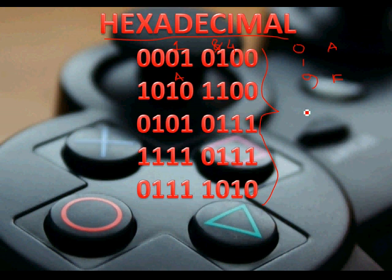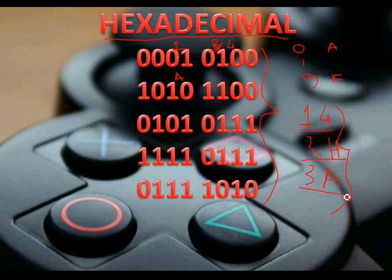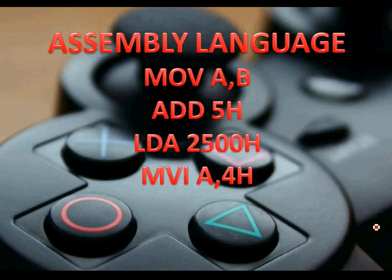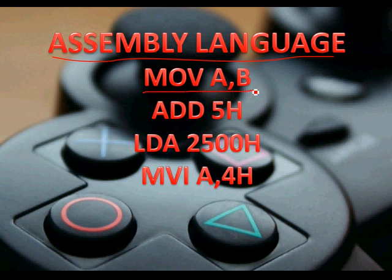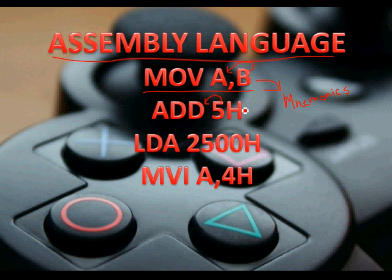Looking at hexadecimal code, can you really make out what these things are? It was pretty painful. Then came another solution: a language named assembly language. Here we use something called mnemonics. Instructions were something like: if you want to move data from B to A, you give the instruction 'MOVE A, B'; if you want to add 5 to the accumulator, you give 'ADD 5H', where H means 5 is in hexadecimal.